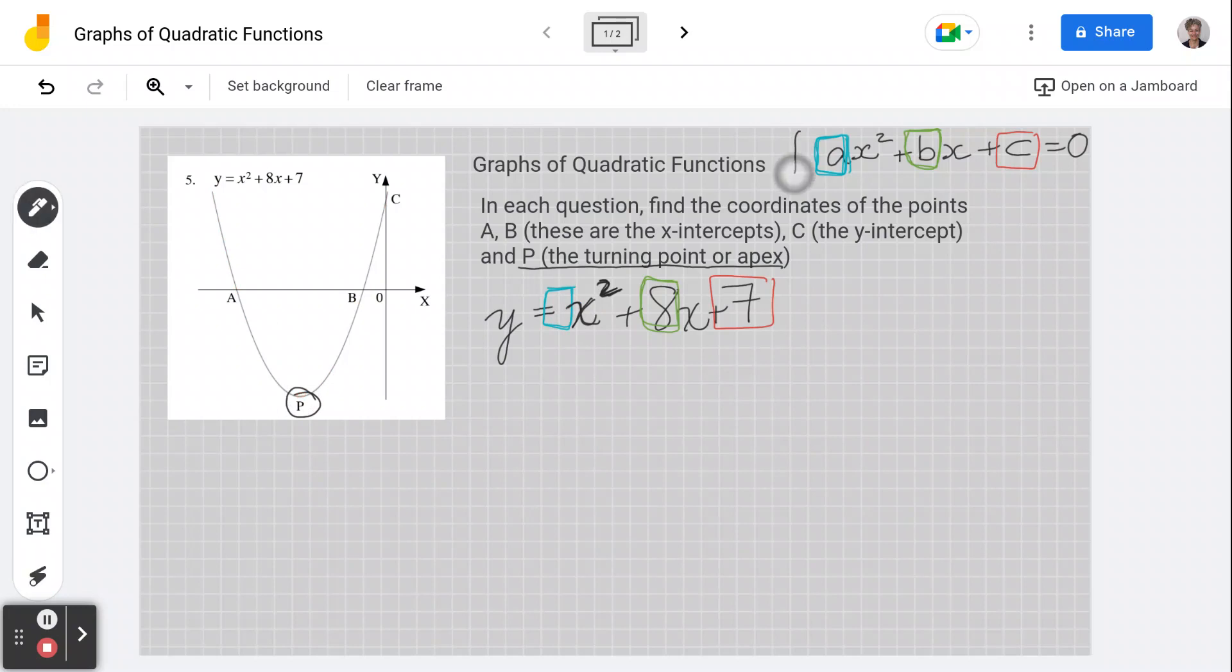So, remembering this formula, we have a formula for turning point. Our apex or turning point formula is, and it's not too hard, x equals negative b over 2a.